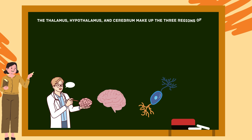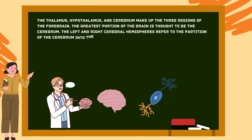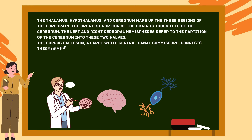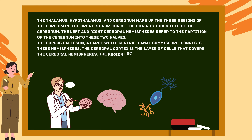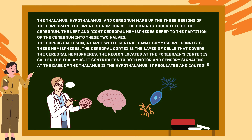The hindbrain comprises the cerebellum, pons, and medulla oblongata. The cerebrum is the greatest portion of the brain, divided into left and right cerebral hemispheres connected by the corpus callosum. The cerebral cortex is the layer of cells covering the cerebral hemispheres. The thalamus, located at the forebrain center, contributes to both motor and sensory signaling. The hypothalamus, at the base of the thalamus, regulates the urge to eat and drink and controls body temperature.